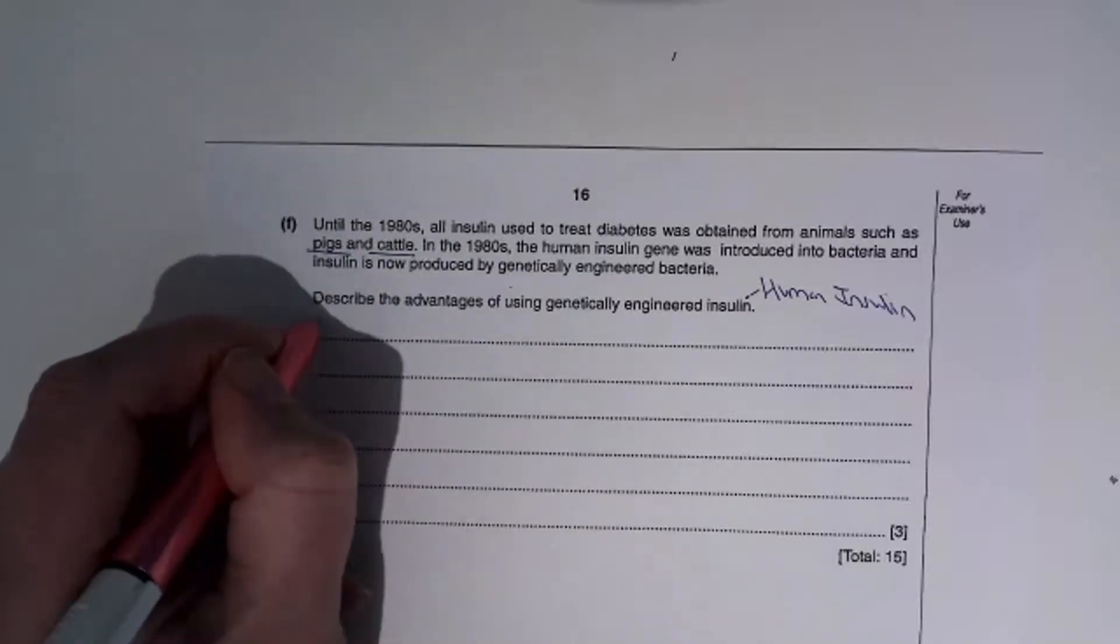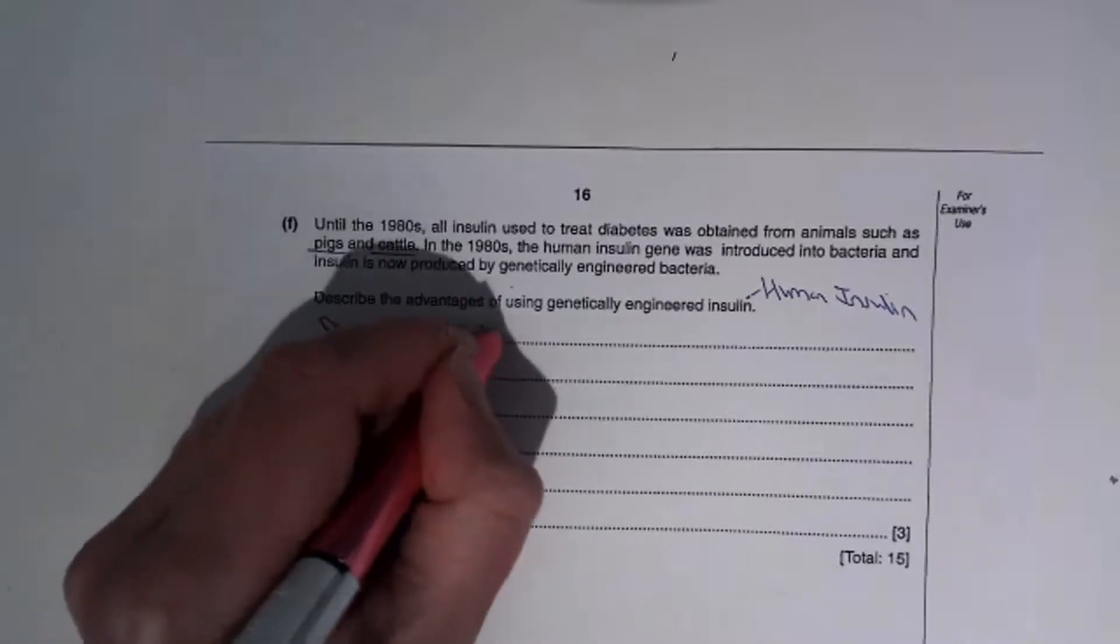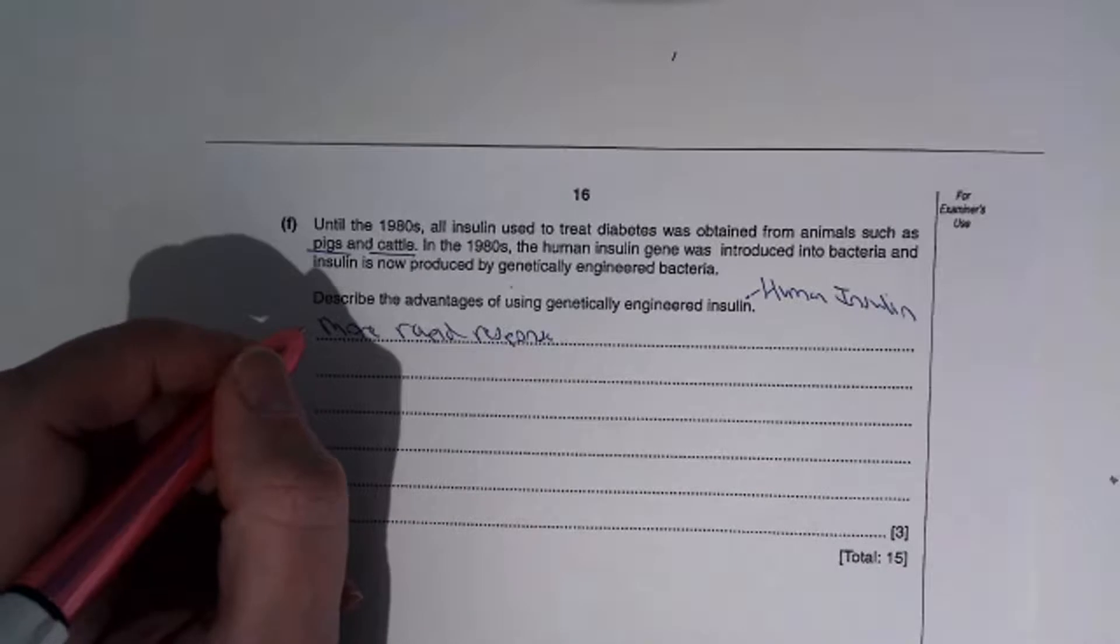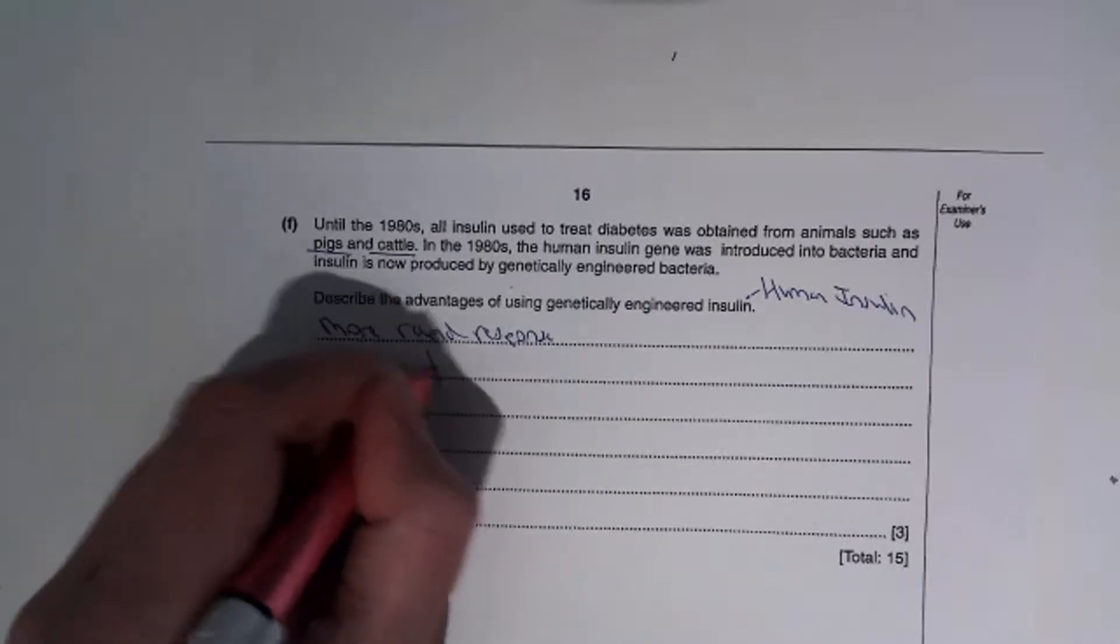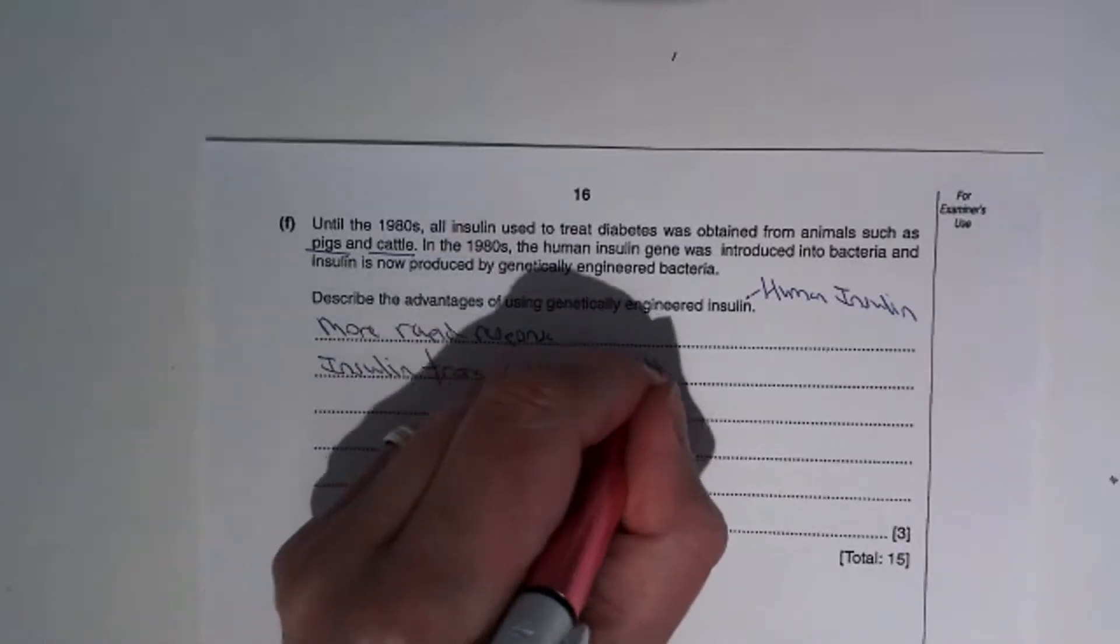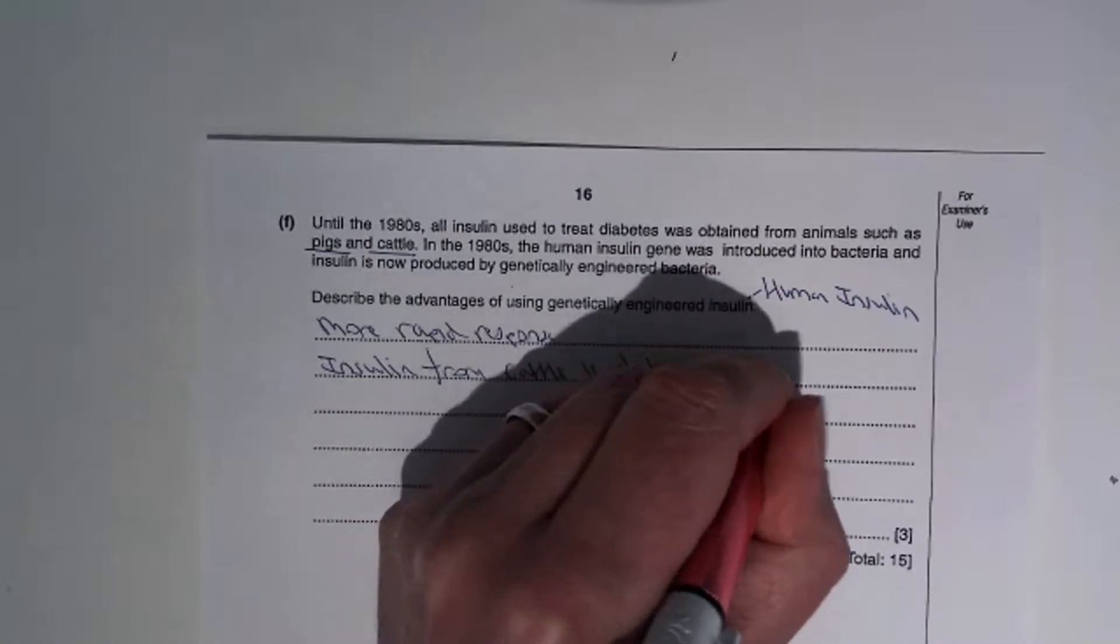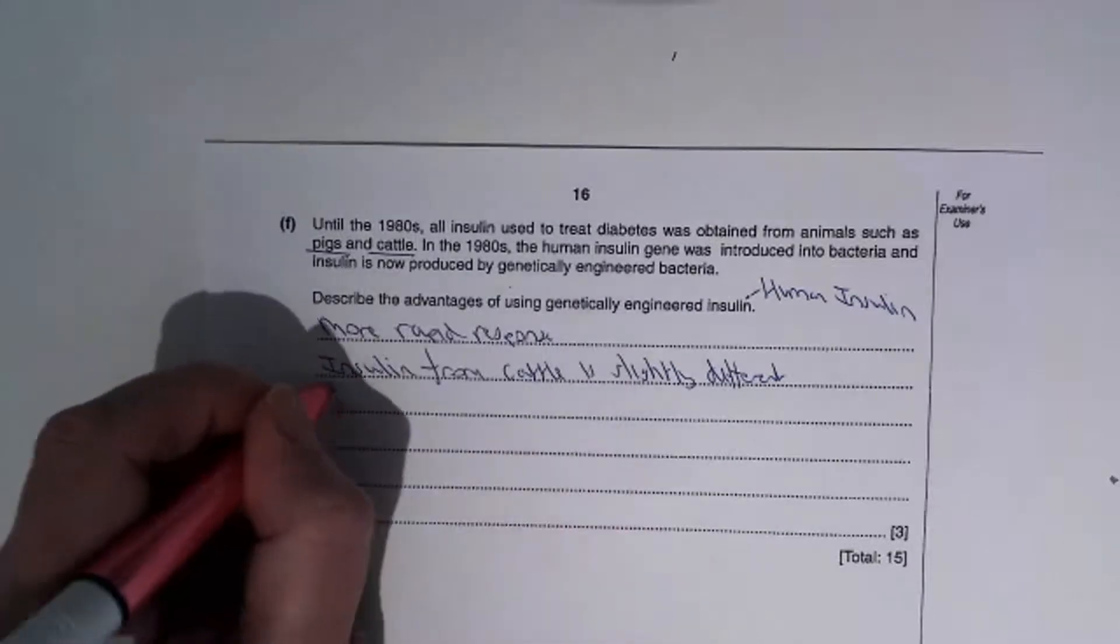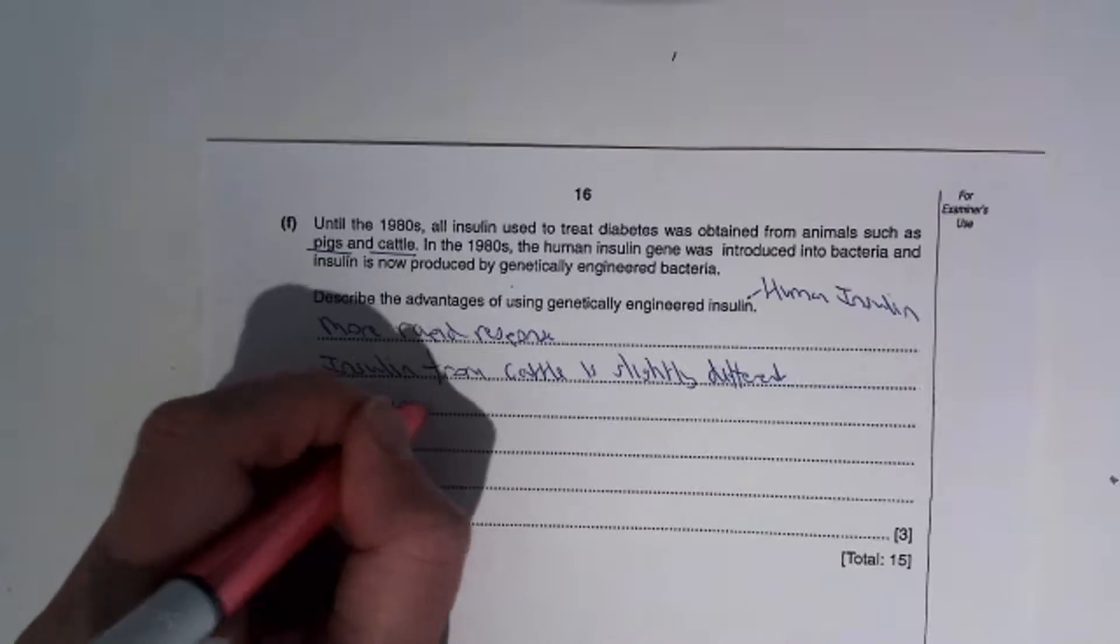The first advantage is that with human insulin you get a more rapid response. That's because insulin from cattle is slightly different. You also get a shorter duration of response.